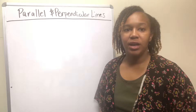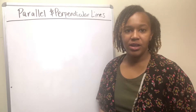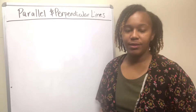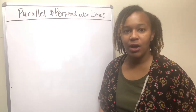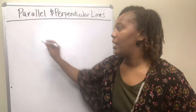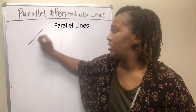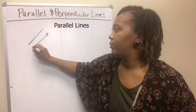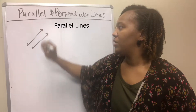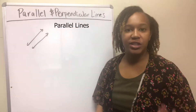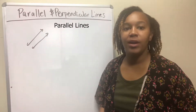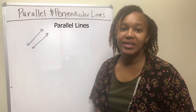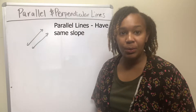In this video, we're going to talk about how to find equations of parallel and perpendicular lines. Parallel lines are two lines that don't intersect. They run side by side, they're changing at the same rate, and therefore parallel lines have the same slope.